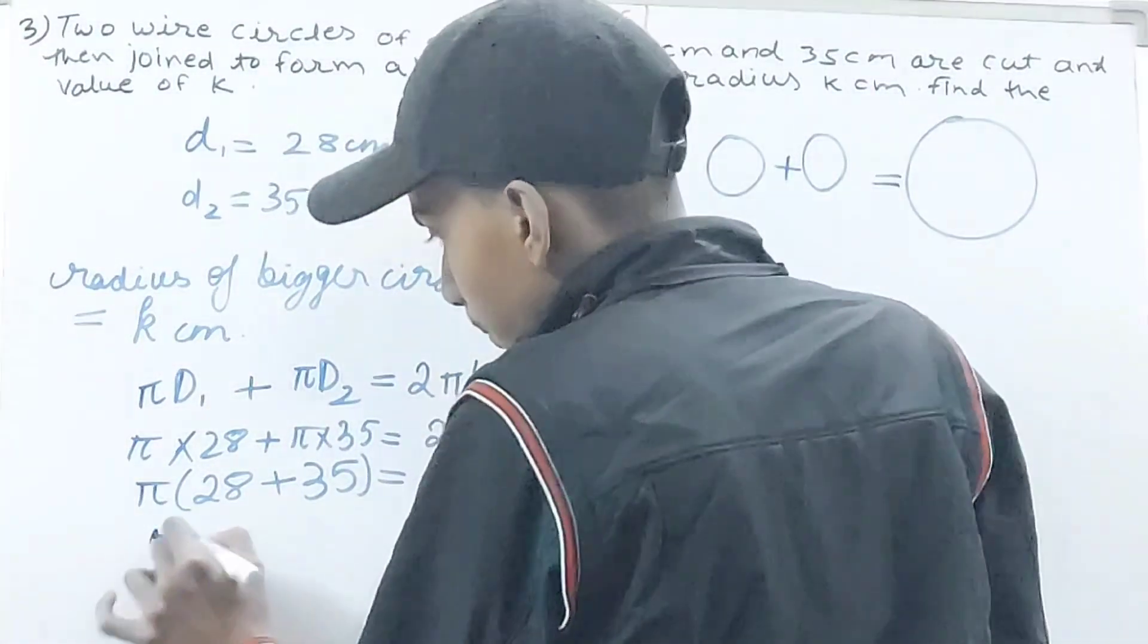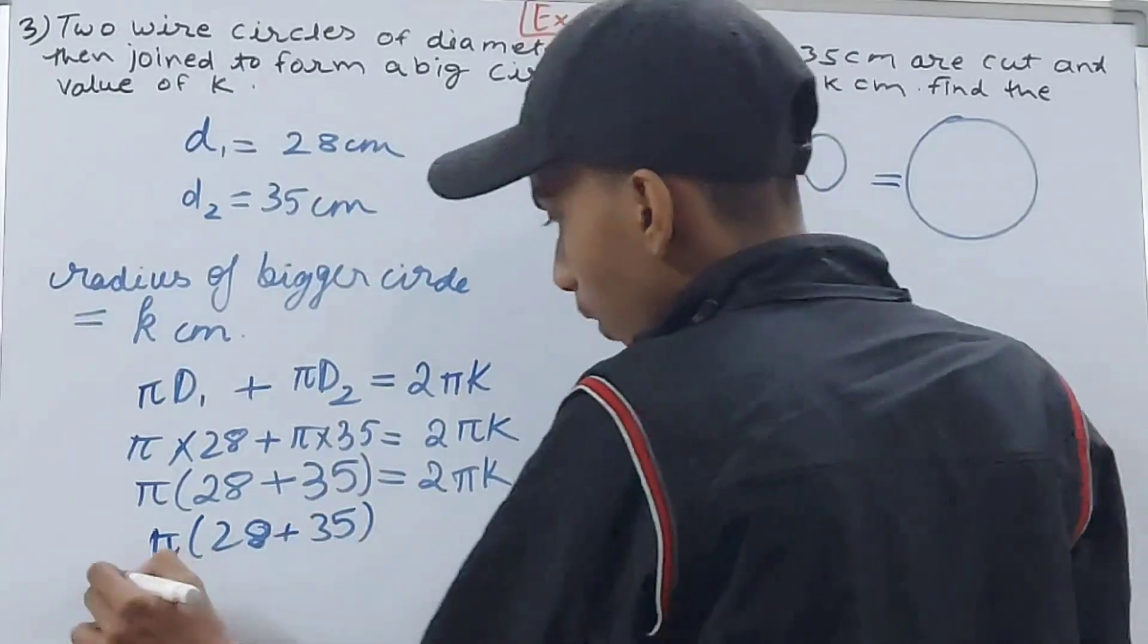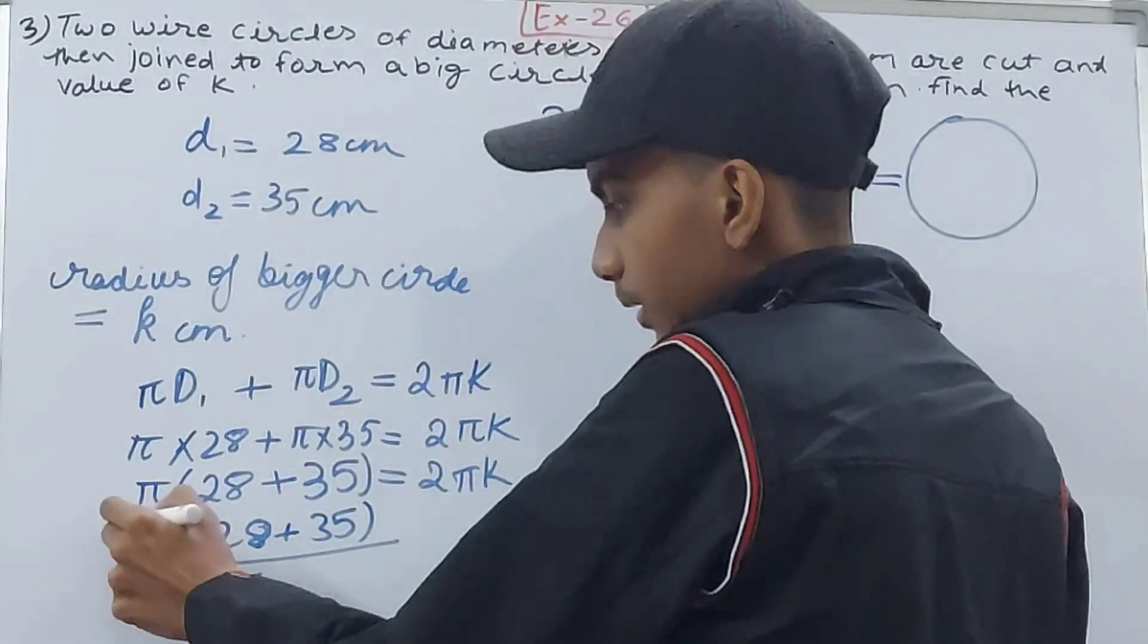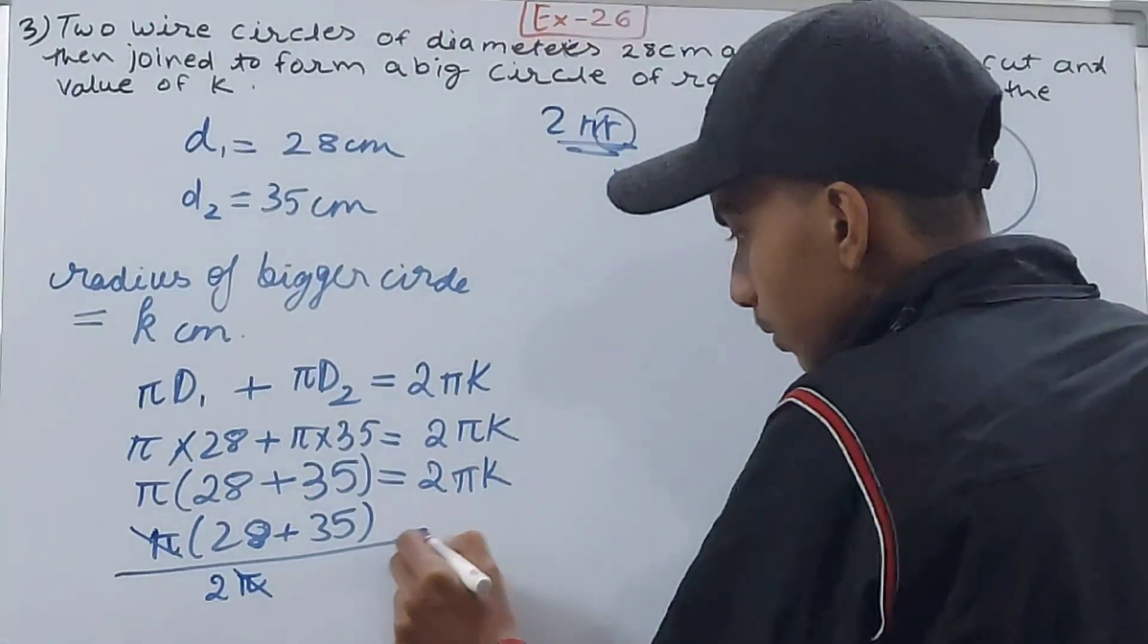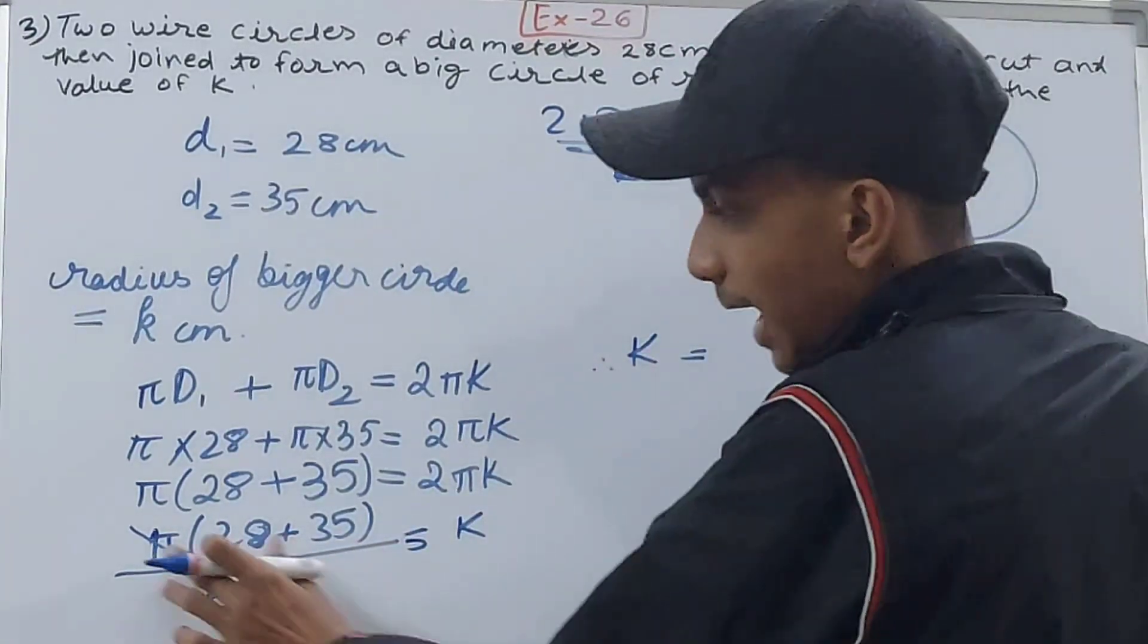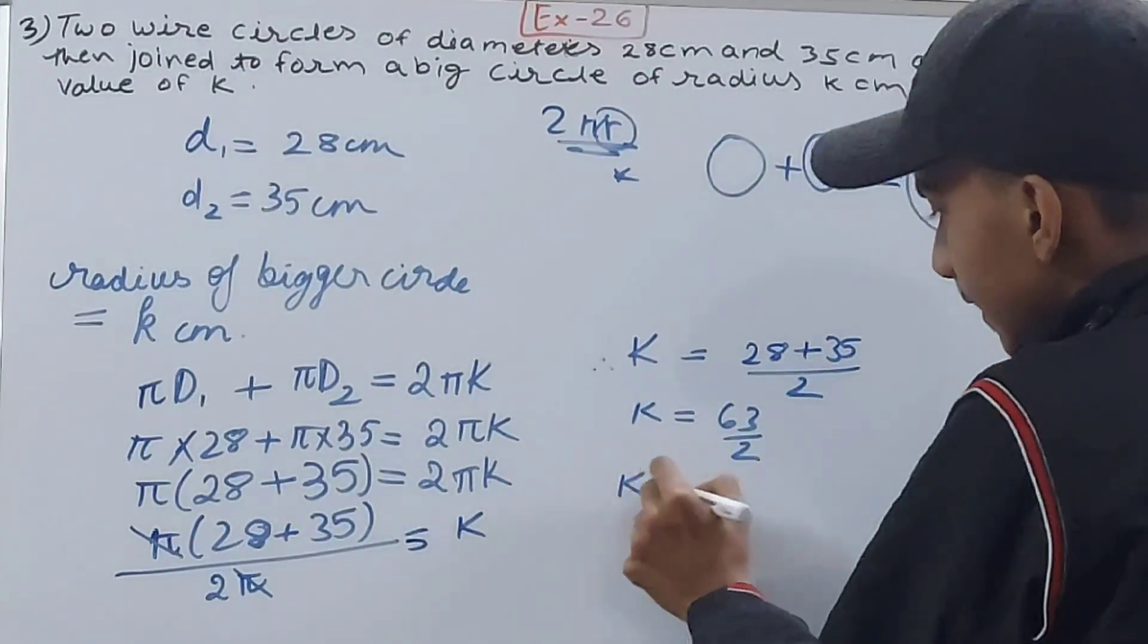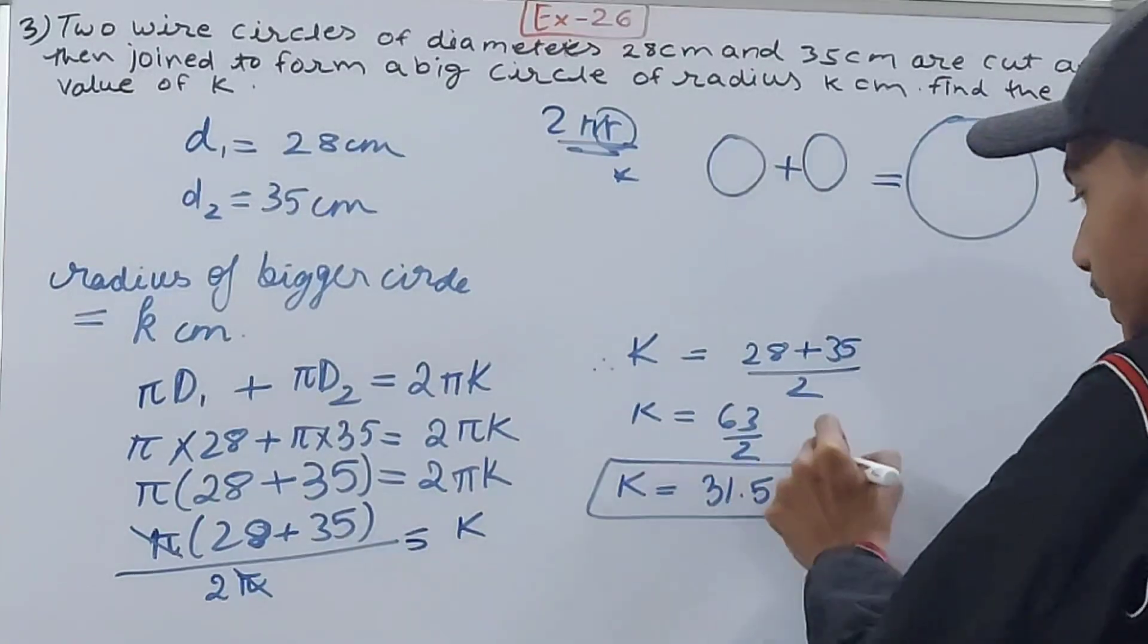So I will take all the other things to the other side: π(28 + 35) divided by 2π equals k. This π and this π cancel each other, and we are left with 28 plus 35 upon 2. So k equals 63 upon 2, which equals 31.5 centimeters. That is the answer or the value of k.